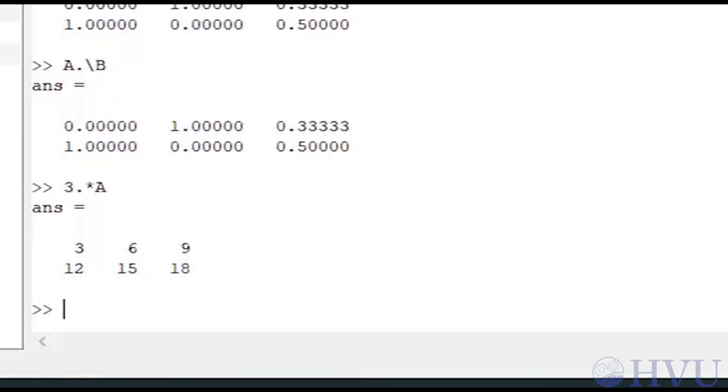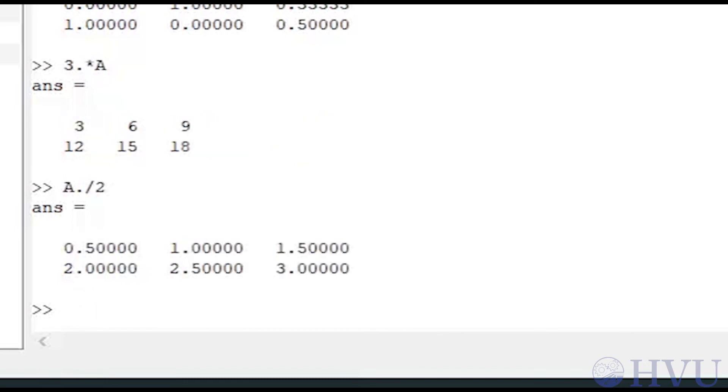Likewise, if we divide by a scalar, every element in the array gets operated on. A dot slash 2 divides every element in A by 2.